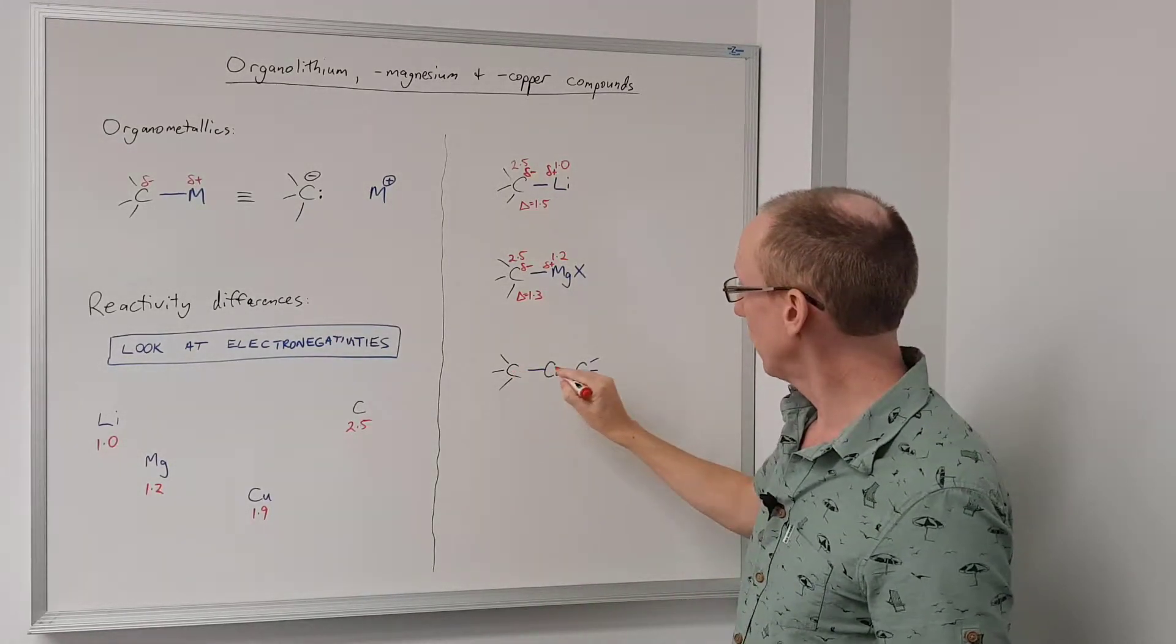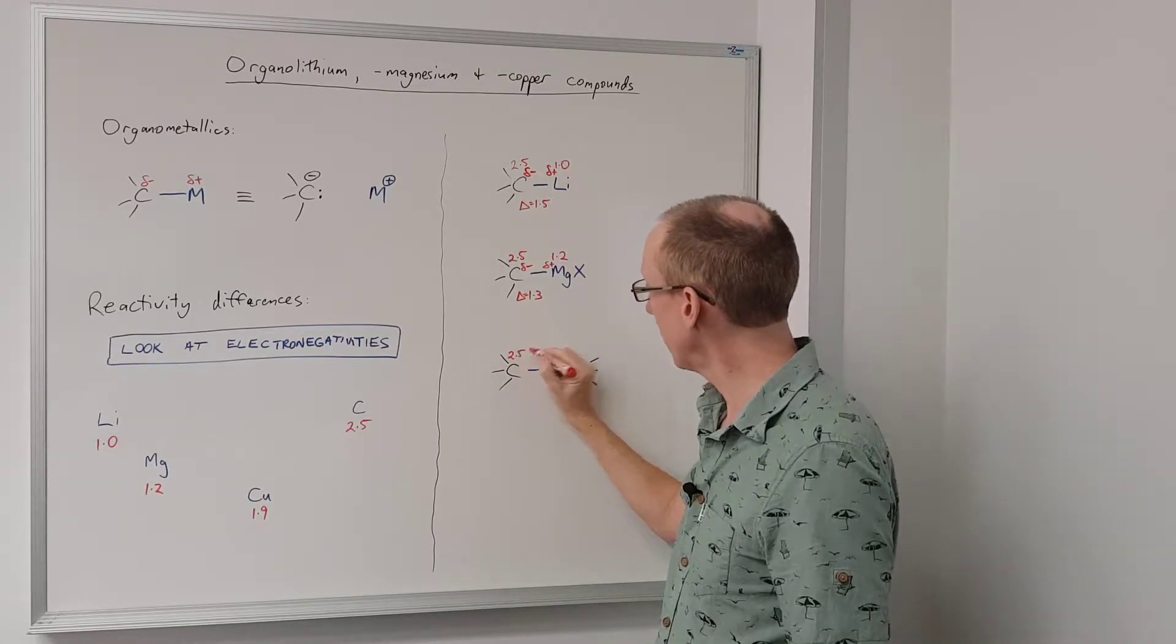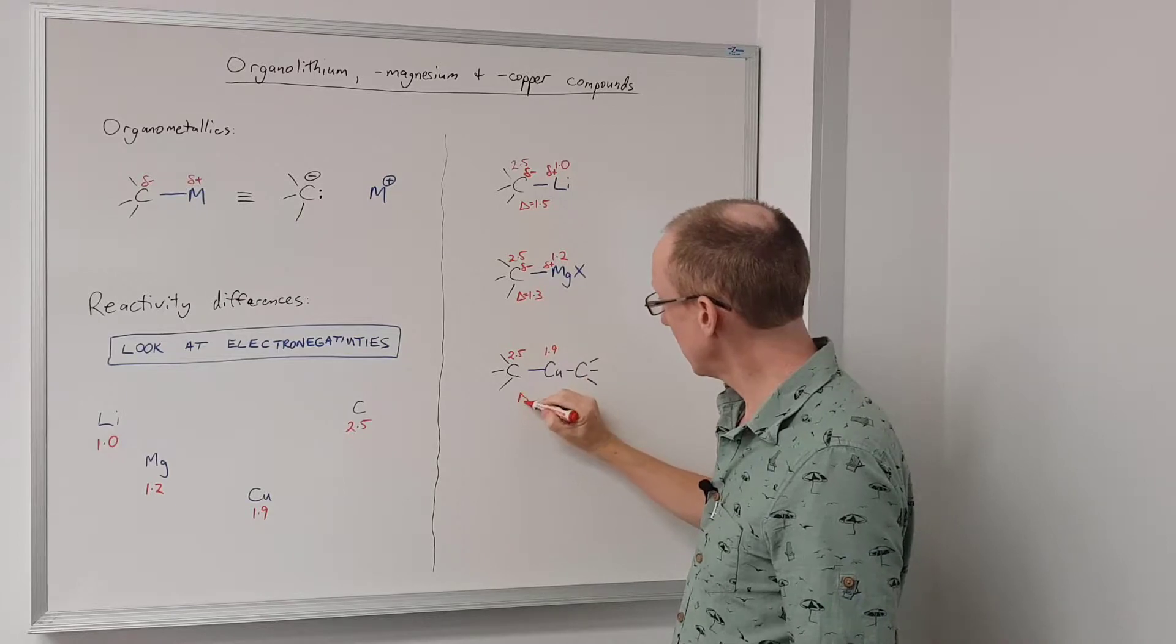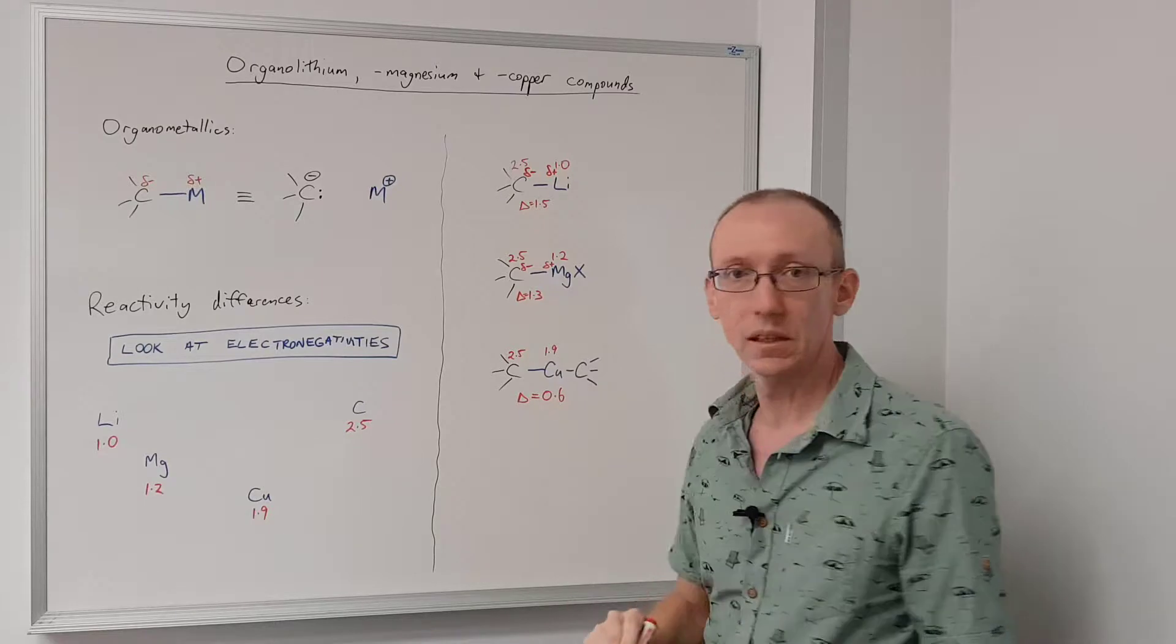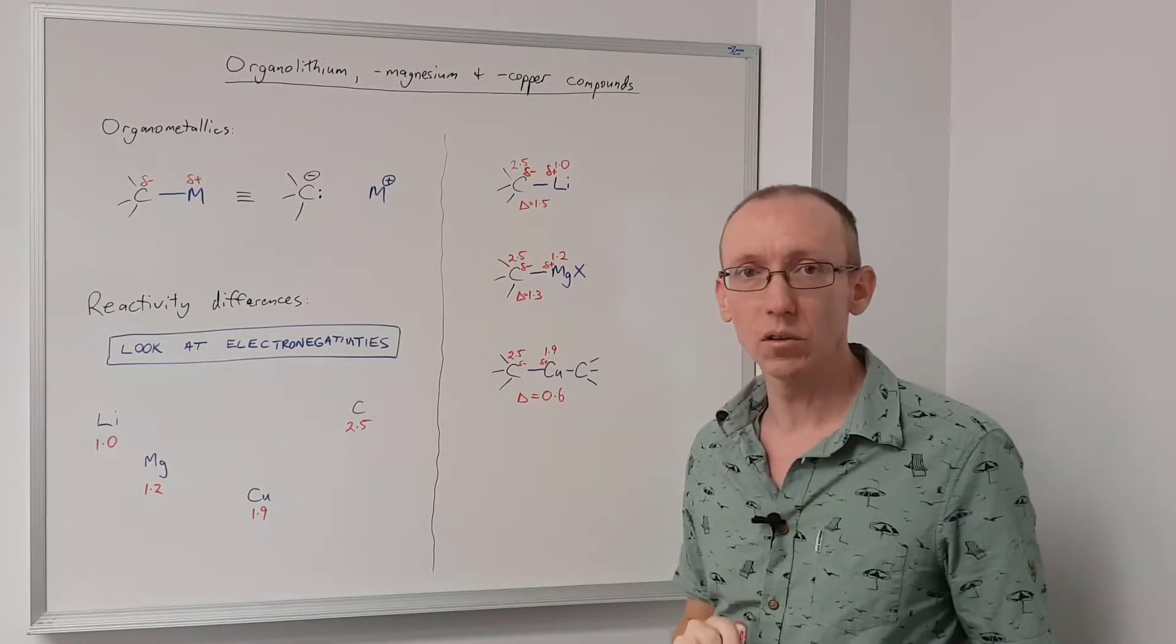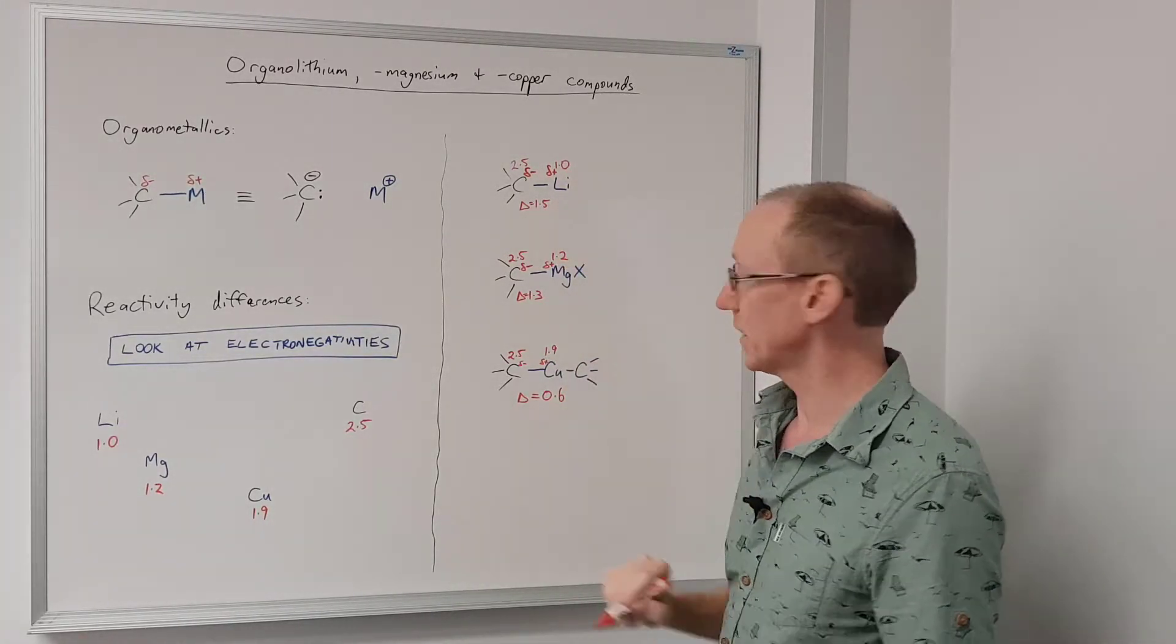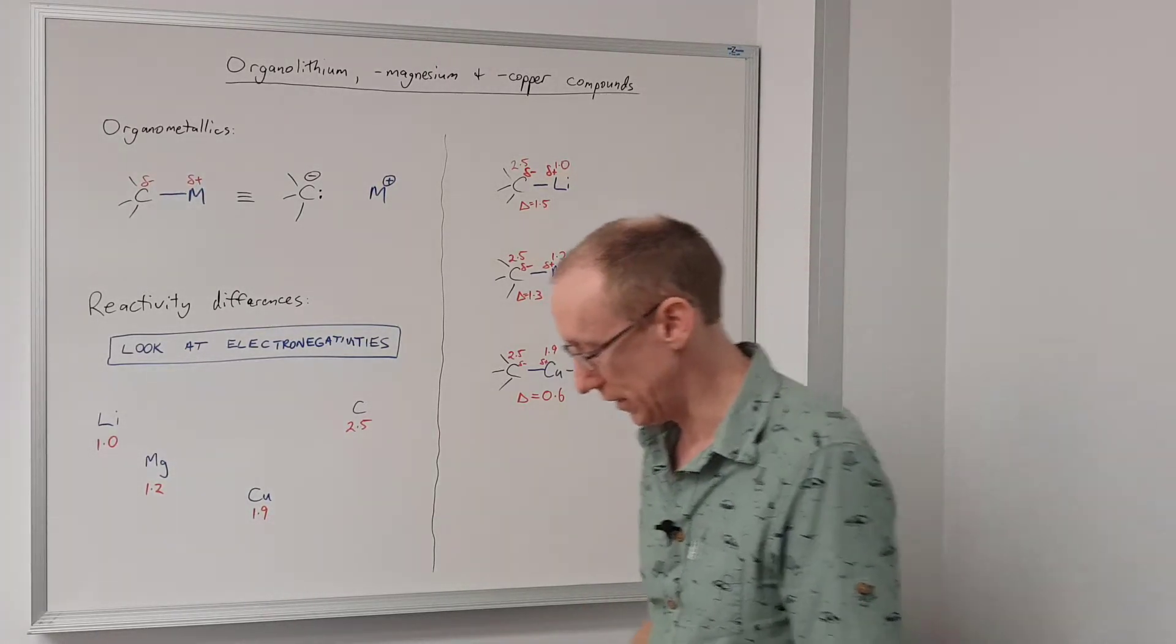If we look at copper versus carbon, once again carbon is 2.5 on the scale, copper is 1.9. And so the difference in electronegativities now is only 0.6. And so this is a less polarized sigma bond than in these two other cases. And so that's a less reactive species than the organolithiums and the organomagnesiums.